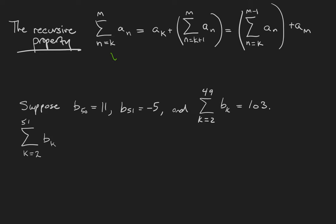Here's the idea. The sum from k to m of the a_n's is, remember, a_k plus a_(k+1) plus dot dot dot plus a_(m-1) plus a_m. If I want to separate the a_m term, I can do that by just regrouping the remaining terms of the sum.